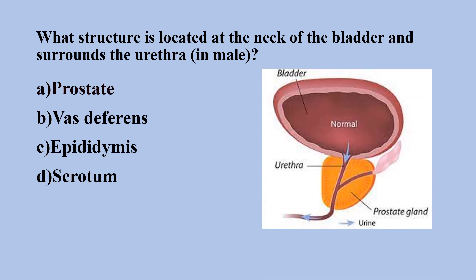The prostate is located below the bladder and in front of the rectum in the male reproductive organ. Its main function is to create fluids in the semen and send them through the urethra during ejaculation. It also helps in hormone production and to regulate urine flow.